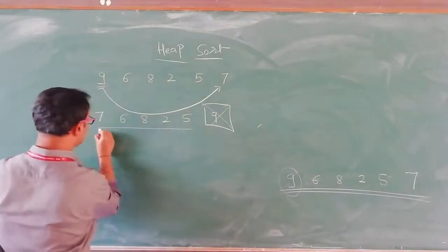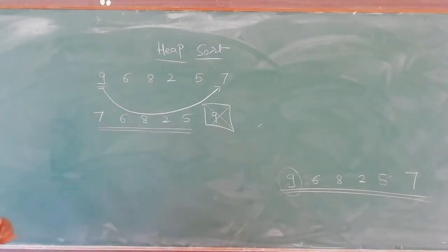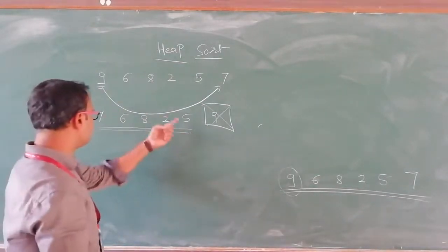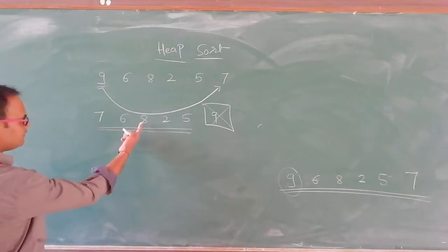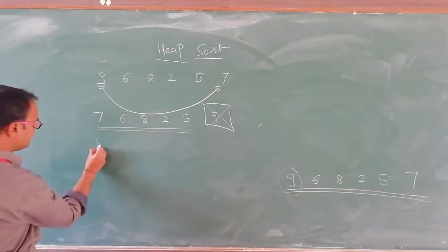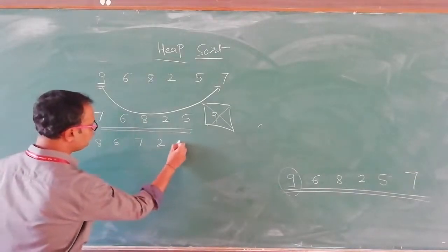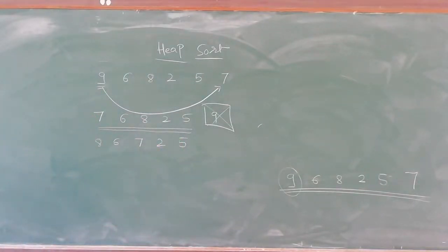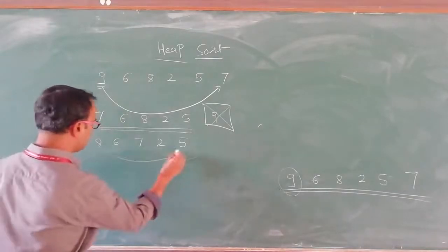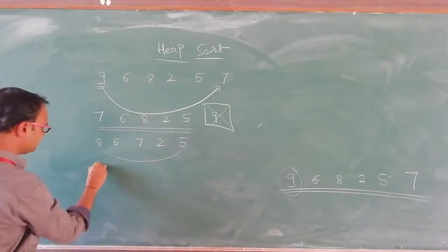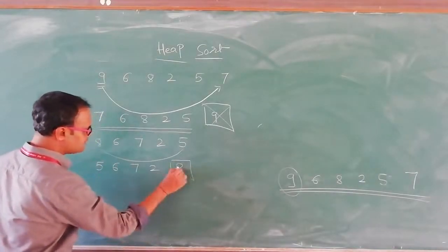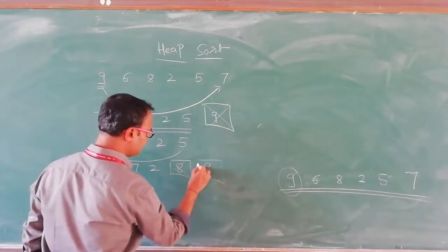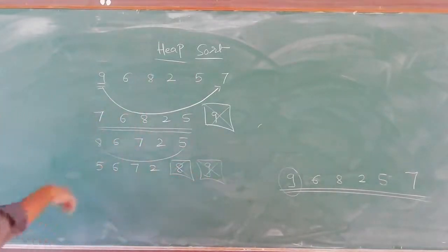With the remaining nodes, if you construct the heap once again, 8 will be at the first position: 8, 6, 7, 2, 5. Since we want to sort numbers in increasing order, we swap — sending 8 to the last position. 5 comes to the front: 5, 6, 7, 2, and 8. The next biggest element is deleted, meaning it has been sent to the last-but-one location.